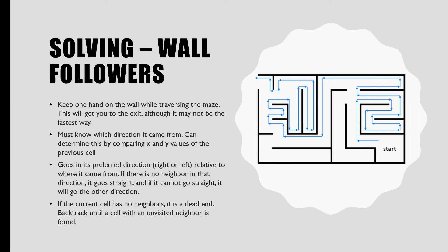If the current cell has no neighbors, that means we are in a dead end. We need to backtrack by marking the current cell as not of our path and then setting the current cell to the previous cell.